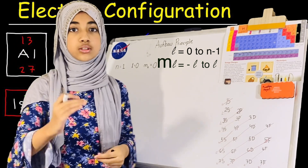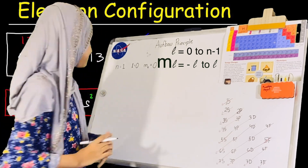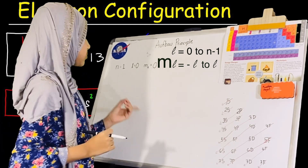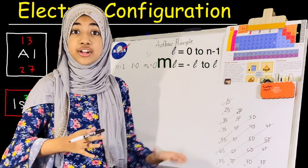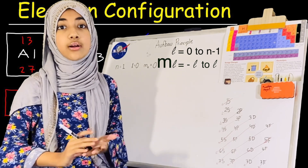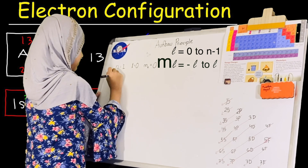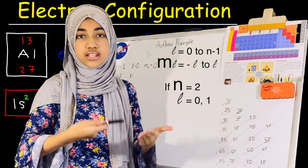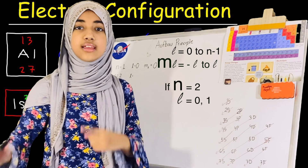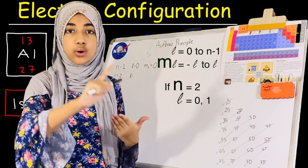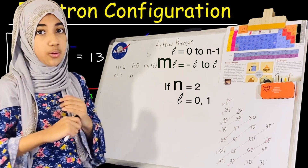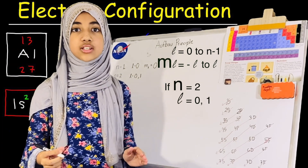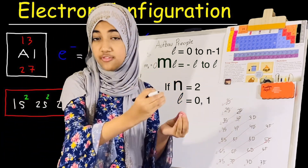Now I want to write down everything for n equals 2, 3, and 4. We're done with n equals 1, which you can also call the first energy level or first shell. Moving on to n equals 2: our l goes from 0 up to n minus 1, so l equals 0 and 1. And ml goes from negative l to positive l for each value of l.